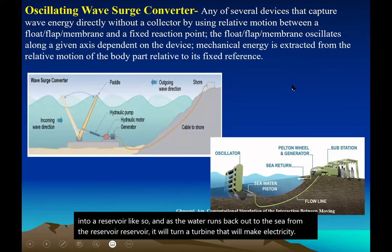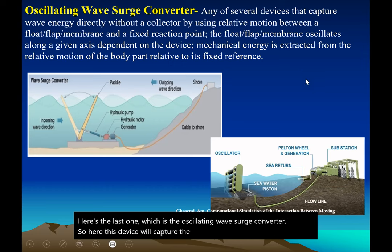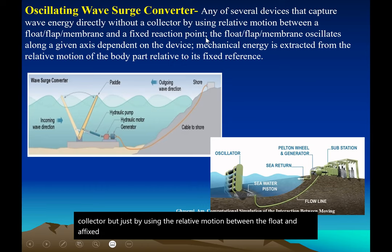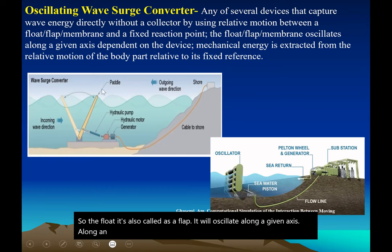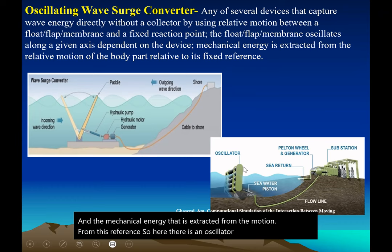The oscillating wave surge converter captures wave energy without using a collector, but by using the relative motion between a float and a fixed reaction point. The float — also called a flap — oscillates along a given axis. The mechanical energy extracted from this oscillating motion generates electricity.